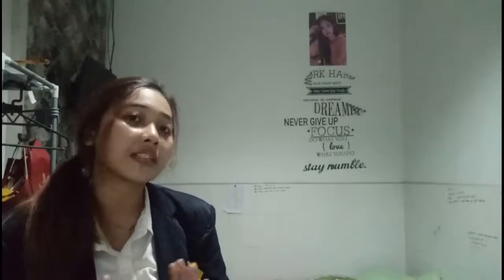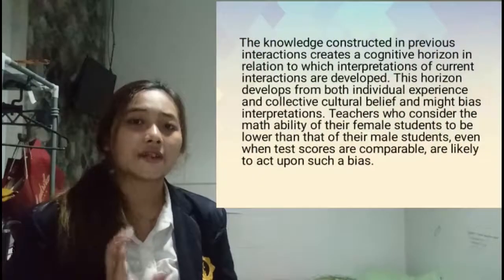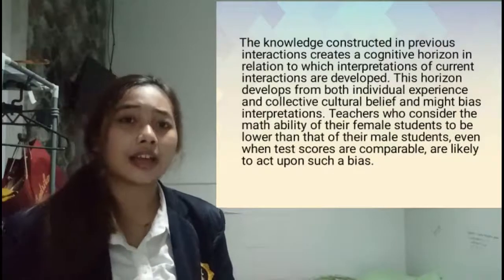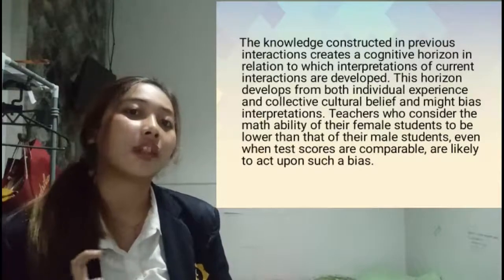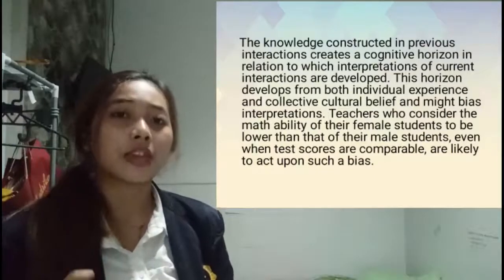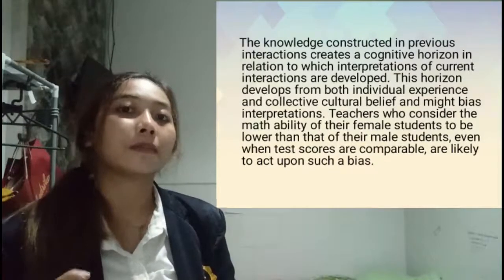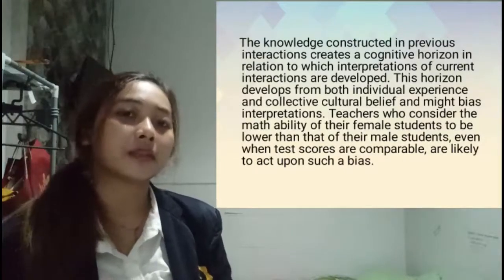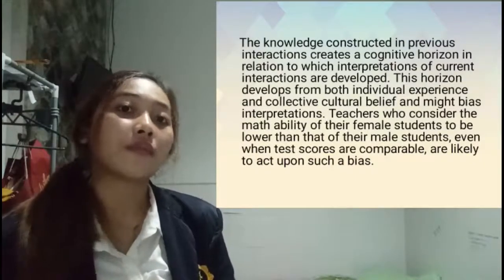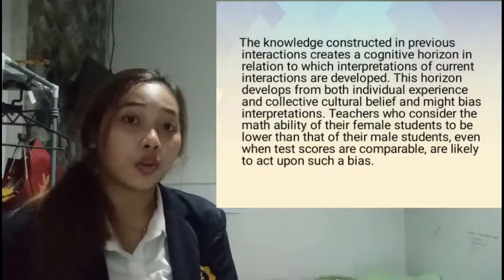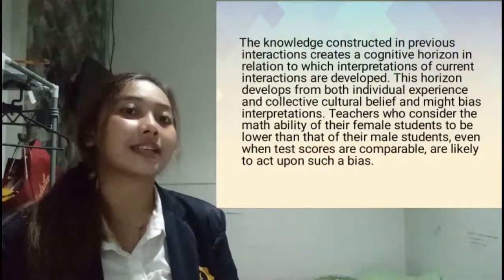Interaction is path-dependent since interactions of student and teacher are not only affected by the current situation, but also by their history of interaction. The knowledge constructed in previous interactions creates a cognitive horizon in relation to which interpretations of current interactions are developed. This horizon develops from both individual experience and collective cultural beliefs, and might bias interpretation. For example, teachers who consider the math ability of their female students to be lower than that of their male students, even when test scores are comparable, are likely to act upon this bias.